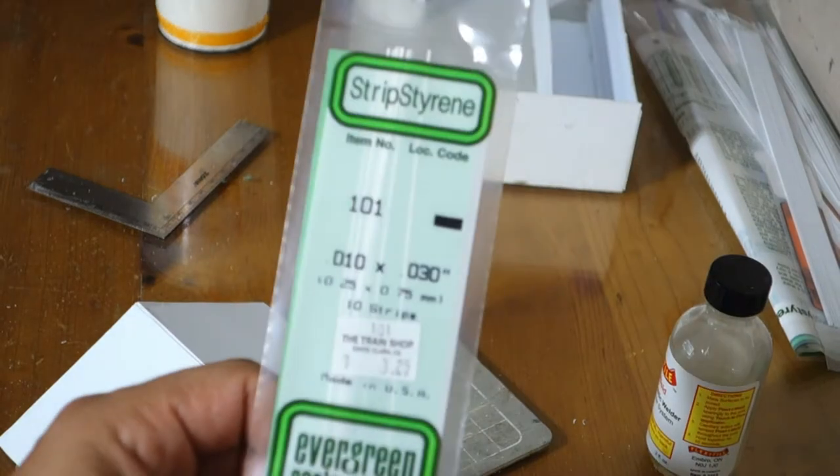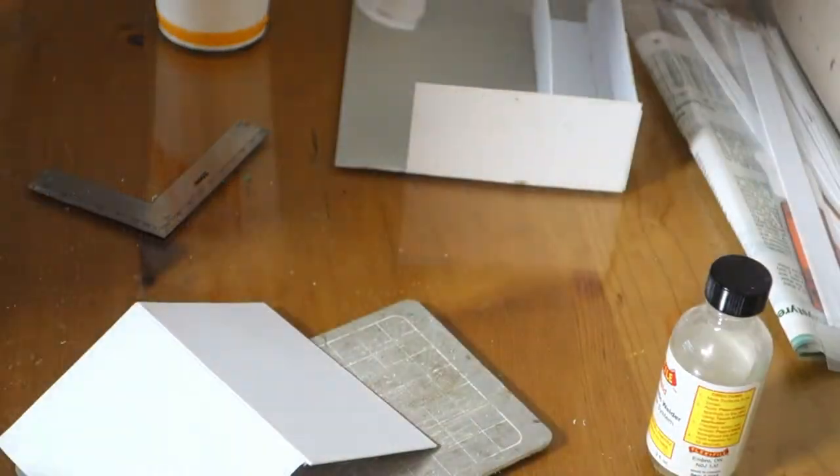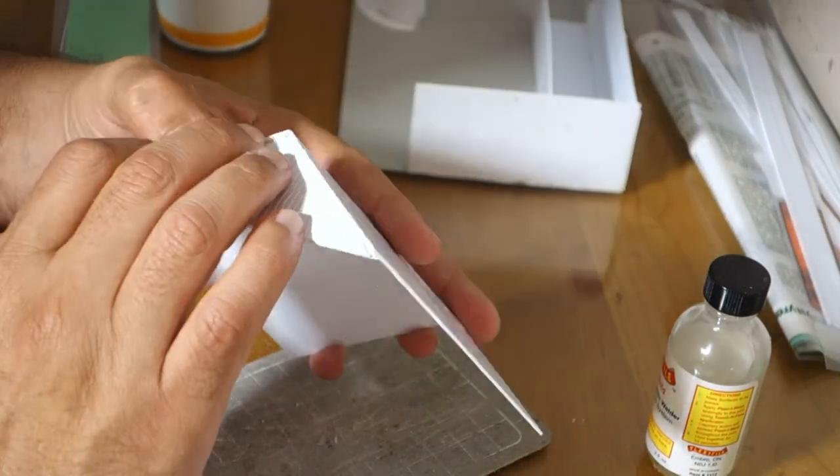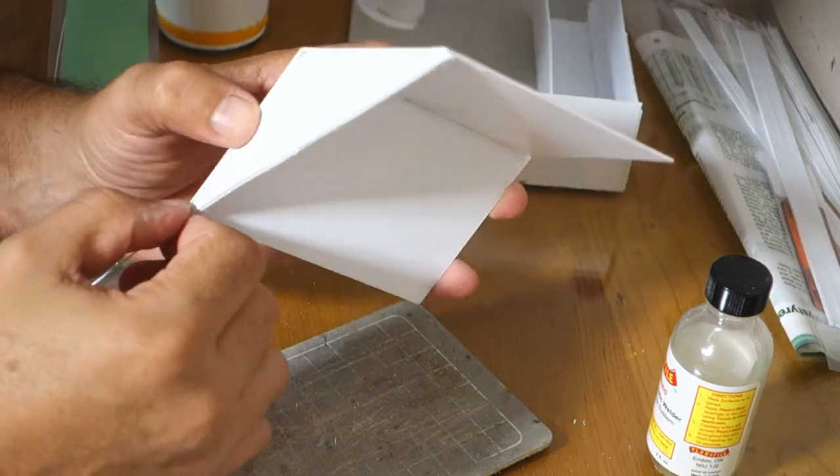The last detail was to put some trim work at the crown where the roof meets the top of the fascia, so I took some plastic and glued it along the top there using CA.